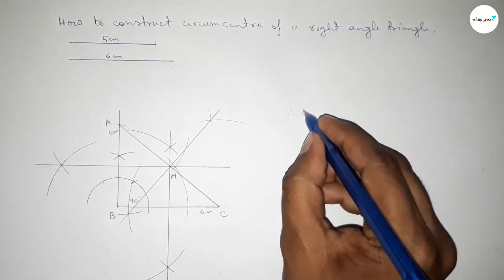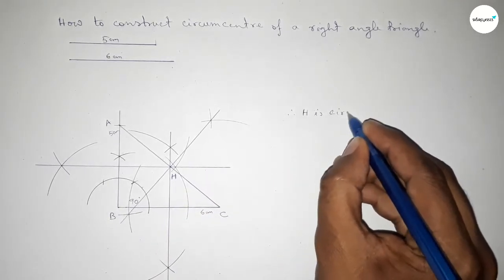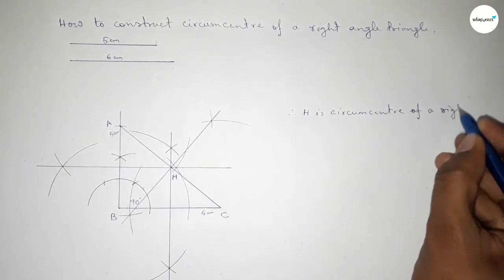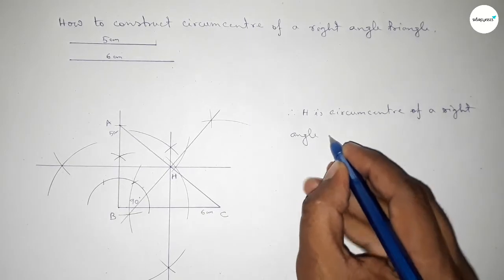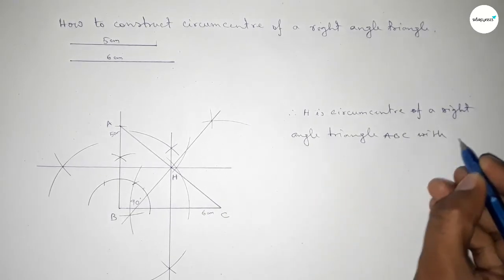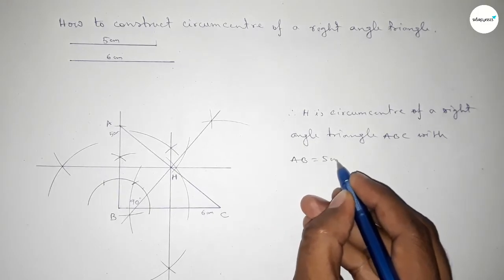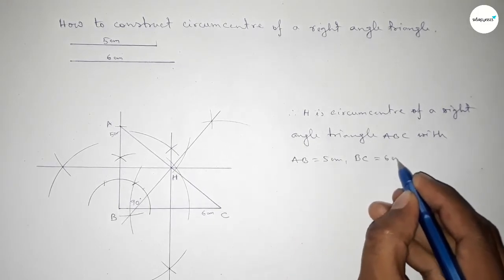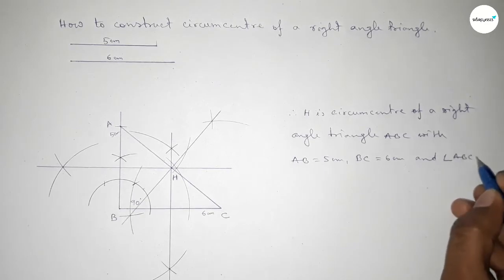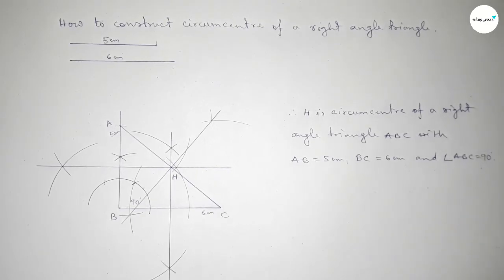Therefore, H is the circumcenter of this right angle triangle ABC, with AB equal to five centimeter, BC equal to six centimeter, and angle ABC equal to 90 degrees. That's all — thanks for watching. If this video is helpful to you, please share it with your friends, and please like and comment.